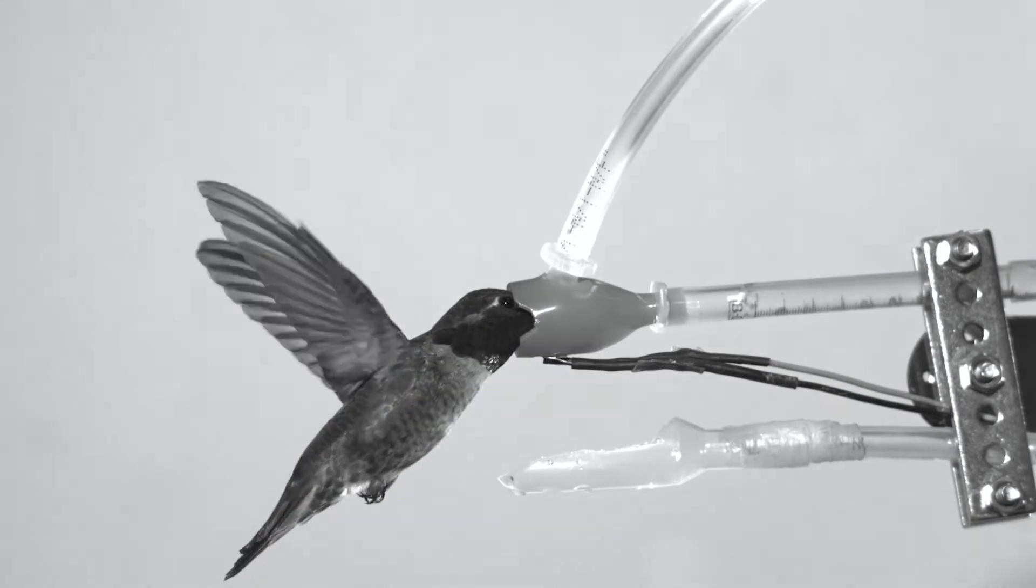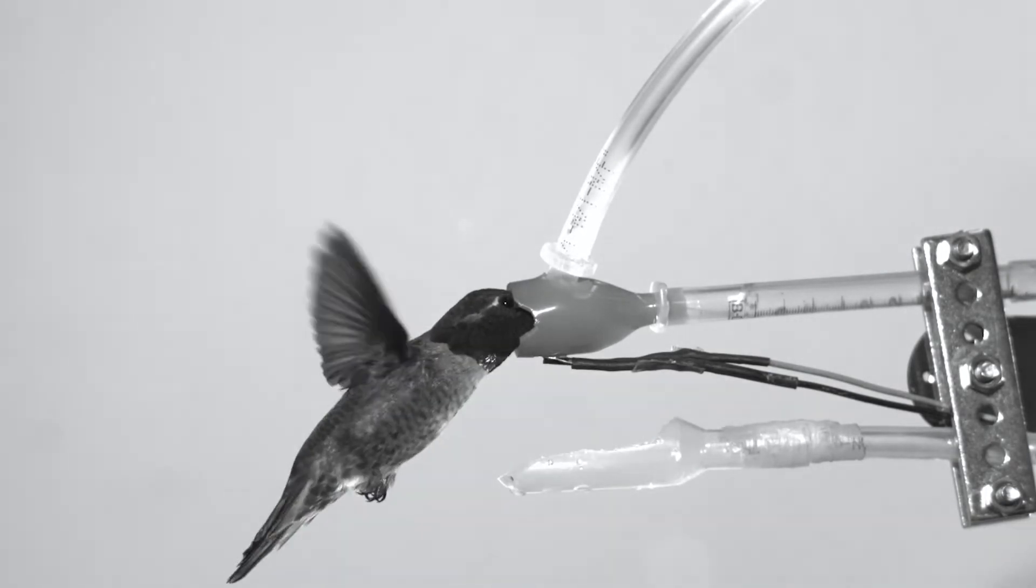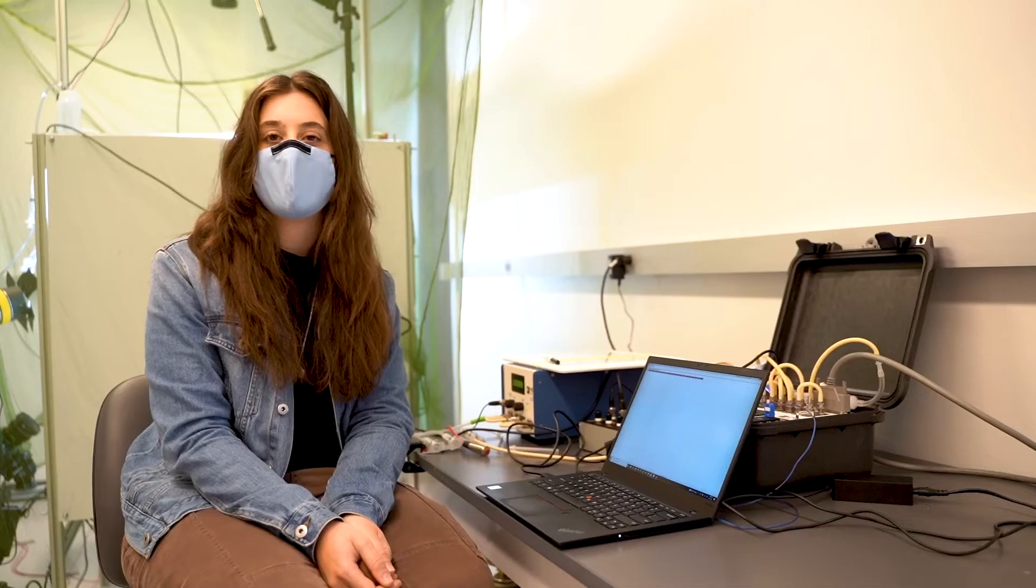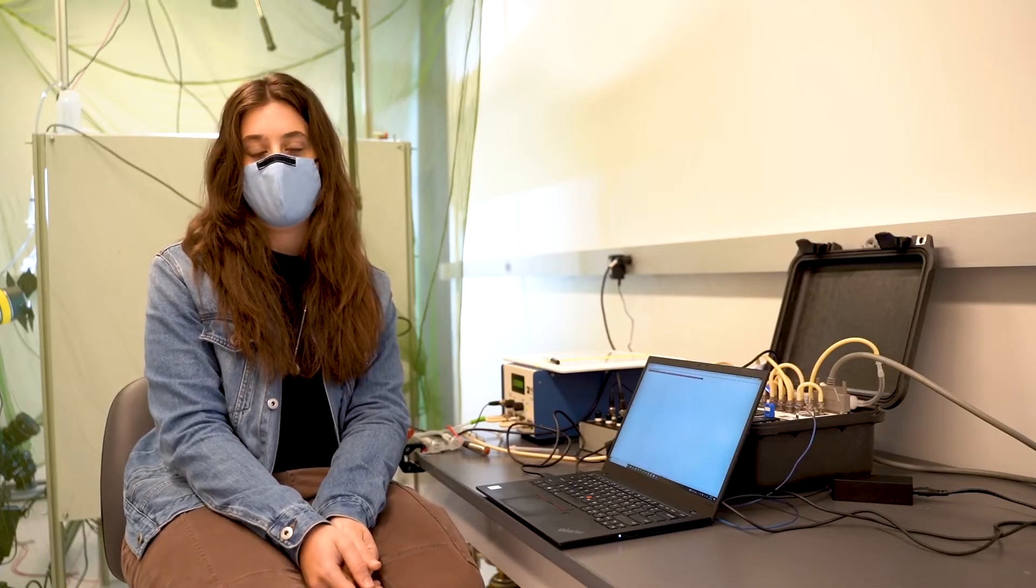These cameras that are attached onto the arena itself, they're high-speed cameras that can capture up to about 2,500 frames per second. So they're incredibly high-speed cameras and we're using them to measure how hummingbirds fly.